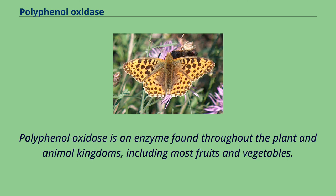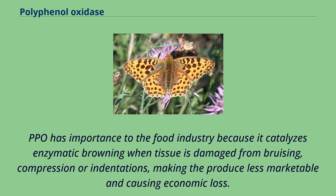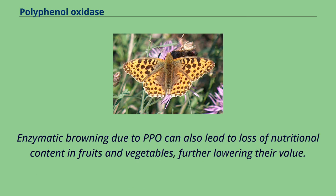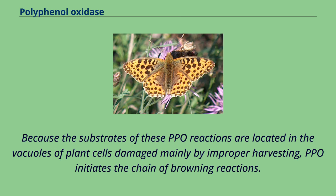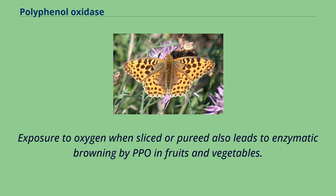Polyphenol oxidase is an enzyme found throughout the plant and animal kingdoms, including most fruits and vegetables. PPO has importance to the food industry because it catalyzes enzymatic browning when tissue is damaged from bruising, compression or indentations, making the produce less marketable and causing economic loss. Enzymatic browning due to PPO can also lead to loss of nutritional content in fruits and vegetables. Because the substrates of these PPO reactions are located in the vacuoles of plant cells damaged mainly by improper harvesting, PPO initiates the chain of browning reactions. Exposure to oxygen when sliced or pureed also leads to enzymatic browning.